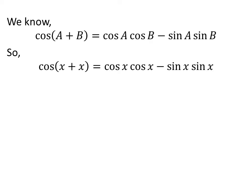If A is equal to x and B is equal to x, then cosine of x plus x is equal to cosine of x times cosine of x minus sine of x times sine of x.